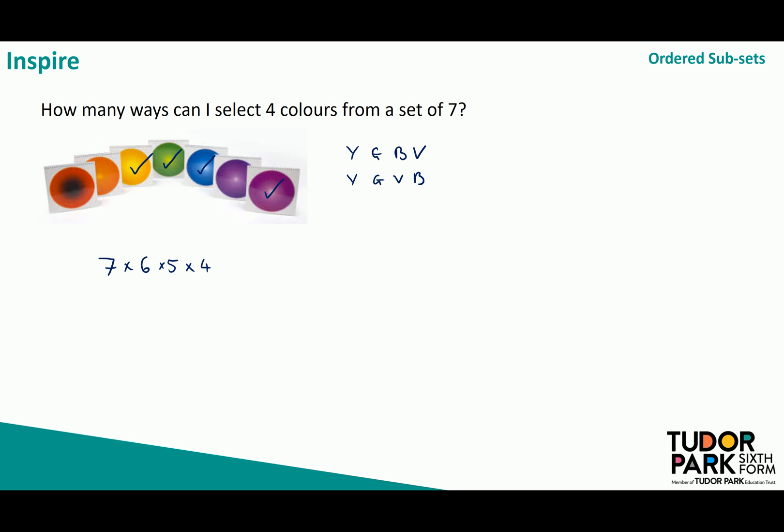Now that almost looks like factorial notation. Almost. I'm just missing three times two times one. But so as not to fundamentally change my answer I'm also going to divide by three times two times one. Now what I do have is factorial notation. The numerator becomes seven factorial and the denominator has become three factorial.